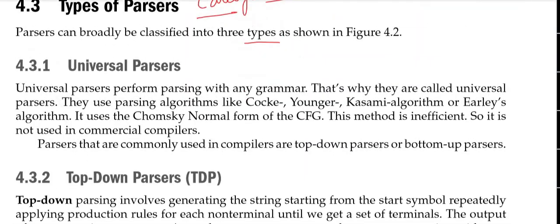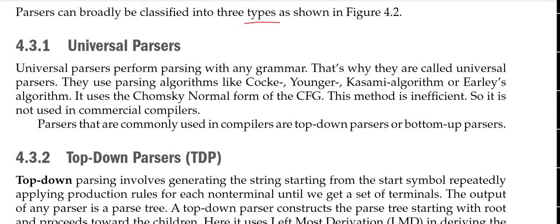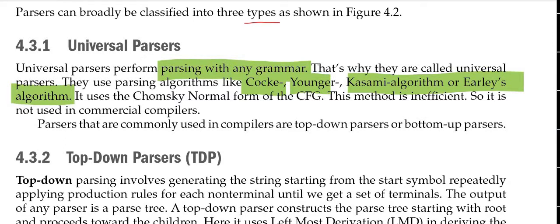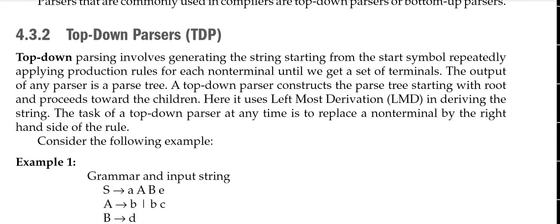First, let's look at Universal Parsers. The parser performs parsing with any grammar — that is why they are called Universal Parsers. They use parsing algorithms and use the Chomsky Normal Form (CNF) of CFGs. However, this method is inefficient and is not used in commercial compilers, so we won't discuss it in much detail.